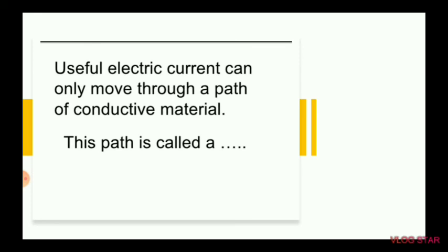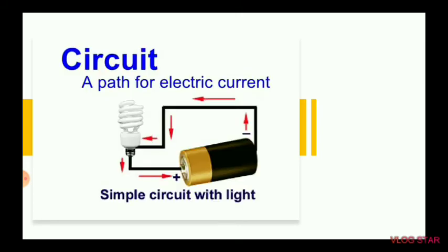Useful electrical current can only move through a path of conductive material. This path is called a circuit. In a simple circuit we find wires, a bulb or motor, and a cell. When you connect it, the light bulb will turn on, completing the path for electric current.